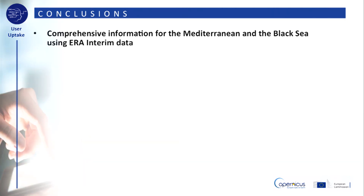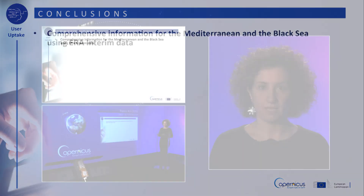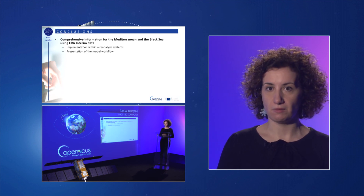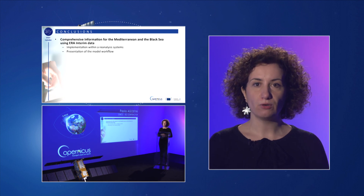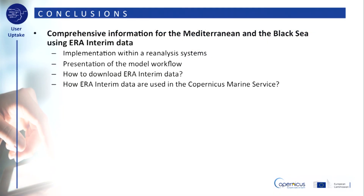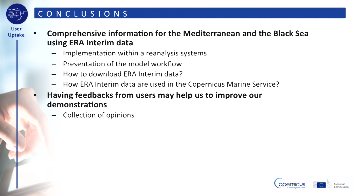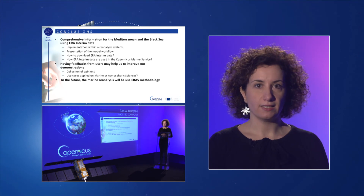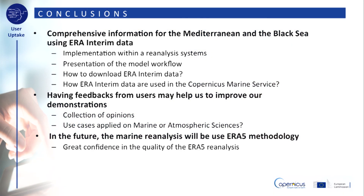This presentation has shown how ocean reanalyses are produced using ERA Interim data and used for evaluating the ocean state and climate in two European seas — the Mediterranean and the Black Sea — in the framework of the Copernicus Marine Service. Involving end users and stakeholders may allow collecting opinions on how ERA data may be used for marine and atmospheric sciences and improving applications. Thanks to a constant update and improvement of the atmospheric modelling components by ECMWF, as in the case of ERA5, ocean reanalysis may further improve in terms of accuracy, performance, and climate description of the ocean state.